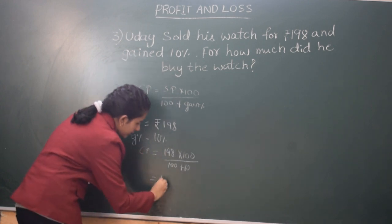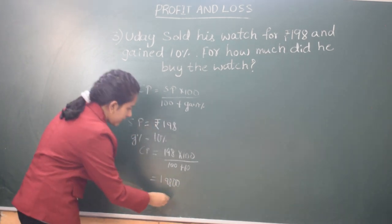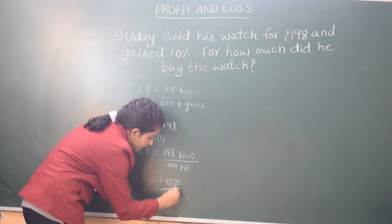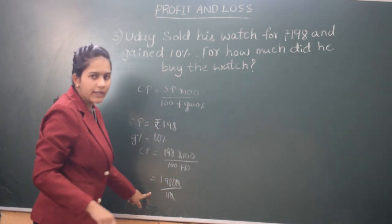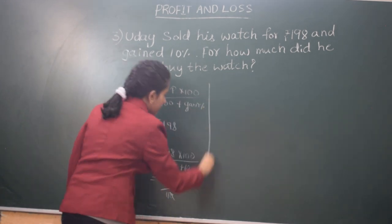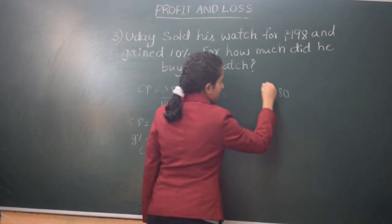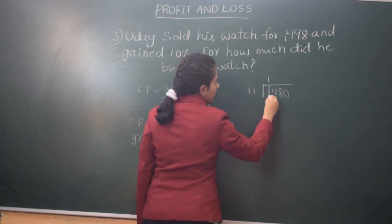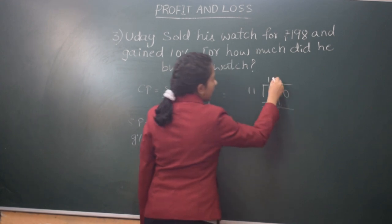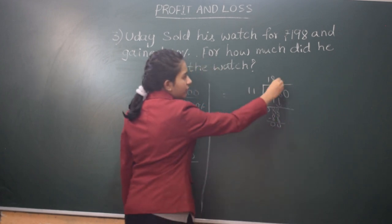Rs.198 into 100 is Rs.19800 divided by 110. We can cancel the zeros. Now, we should divide Rs.198 by 11 to get the answer. 11 nines are 11 and 11 eights are 88. And we have one more zero, so we should put it here.